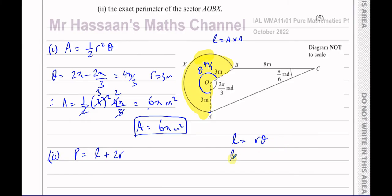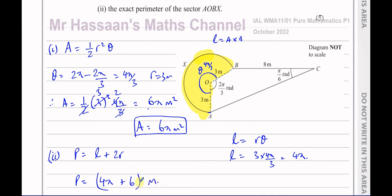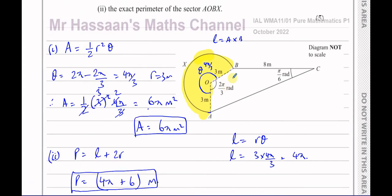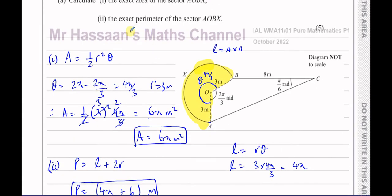The perimeter equals the arc length plus 2 times the radius. The arc length is given by Rθ when θ is in radians, so arc length = 3 × 4π/3 = 4π. Therefore the perimeter = 4π + 2 × 3 = 4π + 6. They want the exact form, so the answer is 4π + 6 metres.